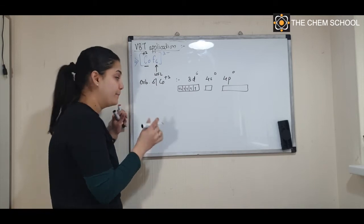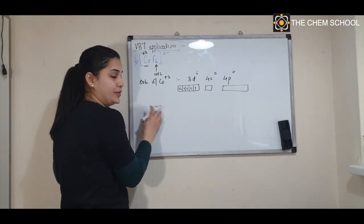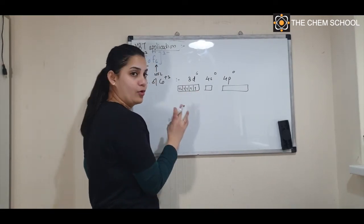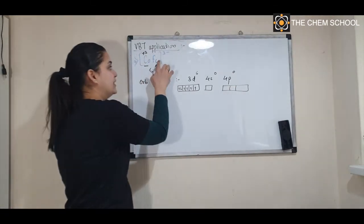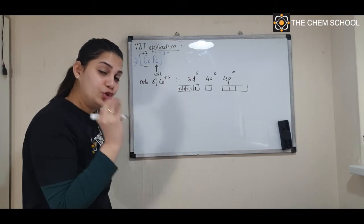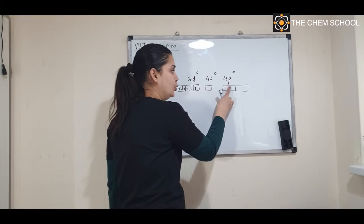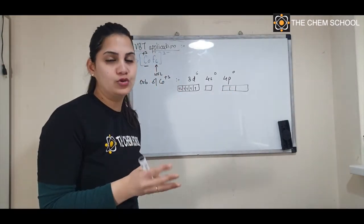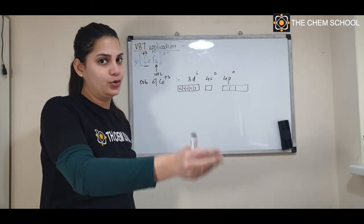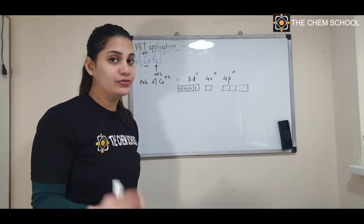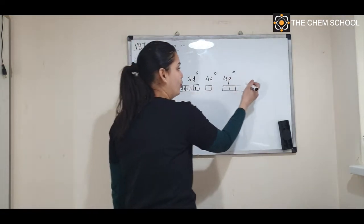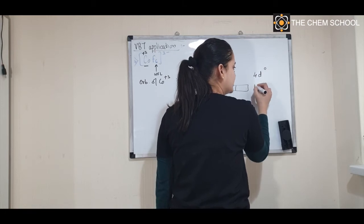Since fluorine is a weak field ligand, there is no spin pairing — the electrons cannot pair with each other. This creates a problem: you have six ligands coming in, so you need six empty orbitals, but counting gives only four empty orbitals. So how will hybridization work? We need to find two more empty orbitals.